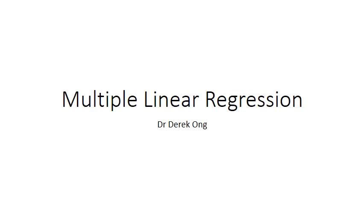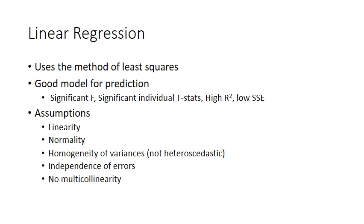Now moving on to multiple linear regression. In multiple linear regression we need to first understand that it uses the methods of least squares. Linear regression actually is good for a model for prediction. One of the ways that we check whether a model is good for prediction is to look at the significance of the F tests. Each of the individual T statistics needs to be significant, high R square with low SSE.